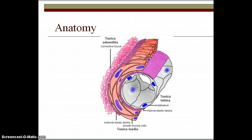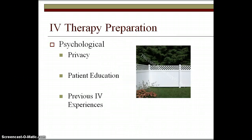The tunica intima is that innermost layer. Arteries carry oxygenated blood to the tissues and are not routinely used for infusion therapy. Veins contain valves which prevent blood from pooling and help prevent blood from going backward, and veins take the blood back to the heart. Veins are classified as either superficial or deep. We can't find the deep ones, but the superficial ones are just under the surface of the skin, making them ideal for site selection.